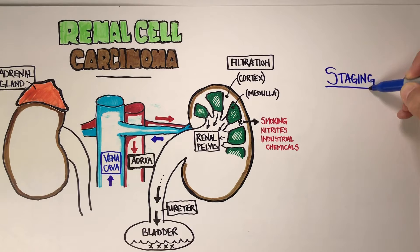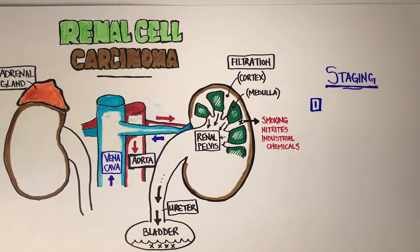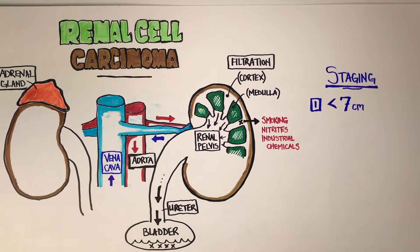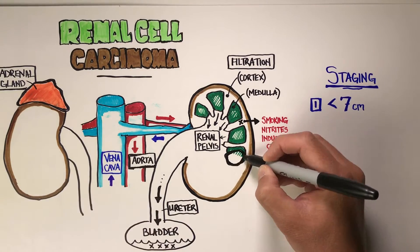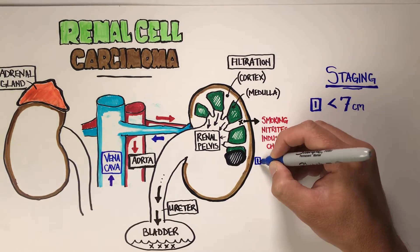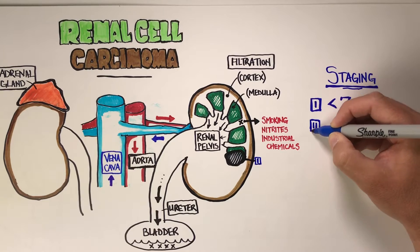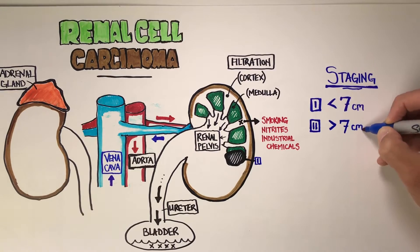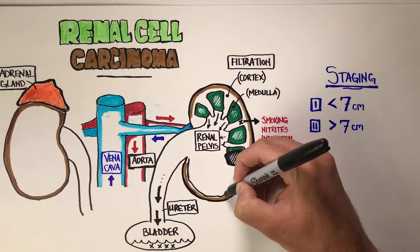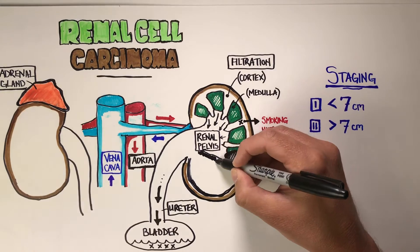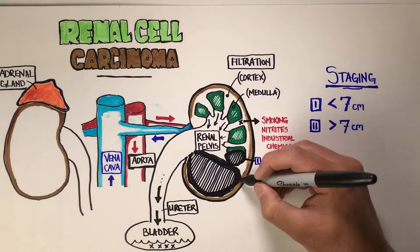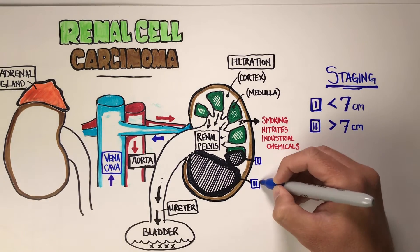Looking at staging — stage one is a tumor found within the kidney that is smaller than seven centimeters. By definition, stage one has no lymph nodes involved and no other spread. Stage two is very similar except the tumor is larger than seven centimeters. A tumor that size can span almost the entire width of the kidney, but it is still within the kidney.